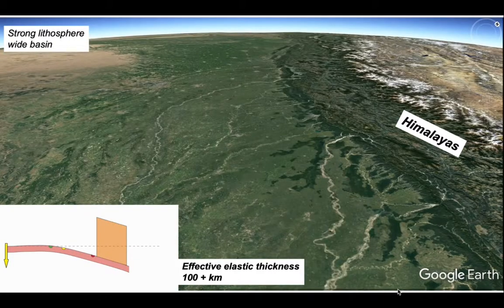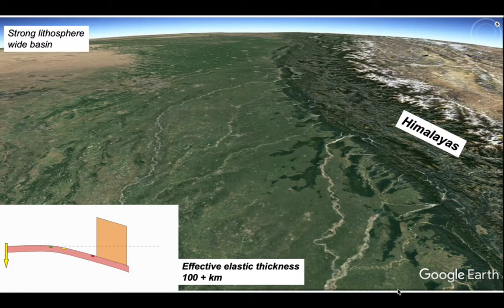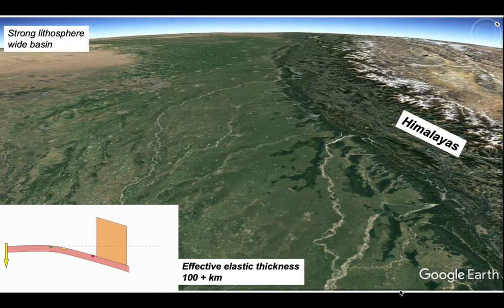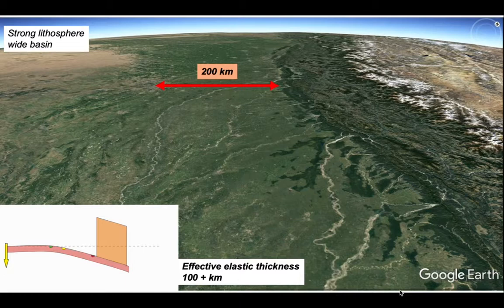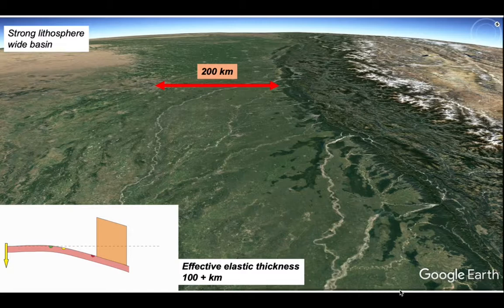We can contrast that with the situation in front of the Himalayas where the Himalayas are overriding the Indian lithosphere. This has an effective elastic thickness of over 100 kilometers. It's old cold lithosphere and correspondingly stronger. And the width of the foreland basin is at least 200 kilometers. It's a pretty neat illustration of how strong lithosphere can support a very wide foreland basin.